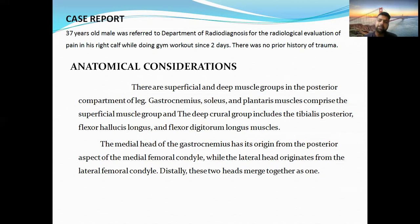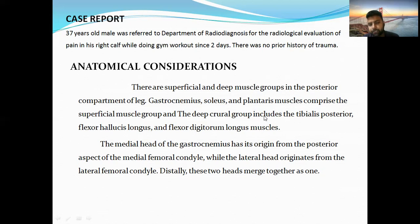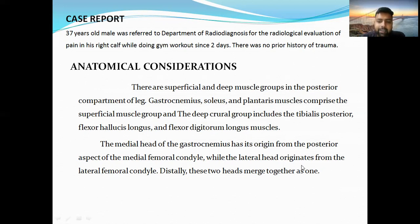For calf muscle pathologies like tennis leg, we have to be very familiar with the anatomy of the calf muscles. There are superficial and deep muscle groups in the posterior compartment of the leg. Gastrocnemius, soleus, and plantaris comprise the superficial muscular group, while the deep crural group includes tibialis posterior, flexor hallucis longus, and flexor digitorum longus. The medial head of gastrocnemius has its origin from the posterior surface of the medial femoral condyle, while the lateral head originates from the lateral femoral condyle; distally, these two heads merge together as one.